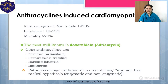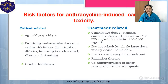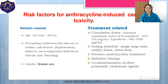Anthracycline-induced cardiomyopathy was detected long ago, sometime in the mid to late 1970s, with a high incidence of 18 to 65% and a mortality of more than 20%. The most common agent is doxorubicin, also known as adriamycin, though the same toxicity is seen with other anthracyclines. The oxidative stress hypothesis — the iron and free radical hypothesis — has been suggested for this toxicity. Predisposing factors include extreme ages (under 18 or over 65 years), pre-existing cardiovascular disease, female sex, high or cumulative doses, prior anthracycline treatment, associated radiation therapy, or co-administration of other cardiotoxic agents.